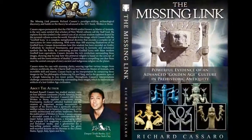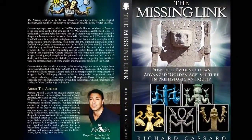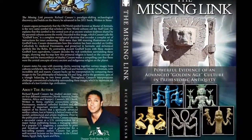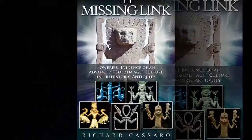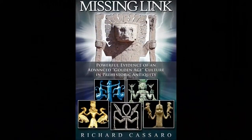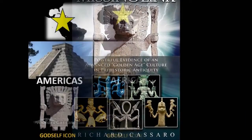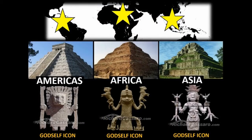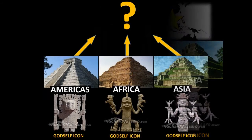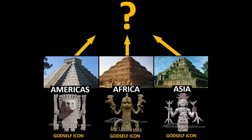Hi, I'm Rich Cassaro. My new book, The Missing Link, focuses on what I call the God Self Icon. We find it in every major ancient culture that built pyramids in the Americas, Africa, and Asia. The God Self Icon is the missing link connecting these ancient pyramid cultures to each other, and possibly to an earlier advanced golden age mother culture — a lost civilization so remote it's been forgotten.